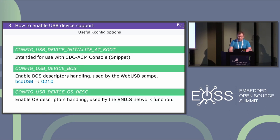We also have CONFIG_USB_DEVICE_INITIALIZE_AT_BOOT. That is specific for boards like USB dongles — an nRF52840 dongle or similar devices. Users would like to have the USB support start automatically and use CDC-ACM for logging. That's the only reason for this option. You can also use it with the CDC-ACM snippet to enable logging right at runtime from the beginning, without needing to call USB enable from your application.